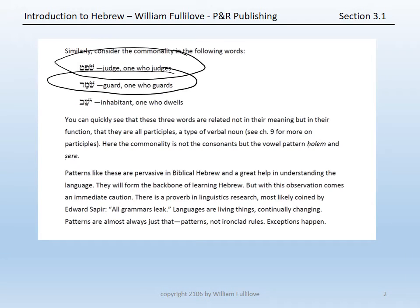You'll notice that these three again have a similarity, but now the similarity is not which three consonants are involved, but is instead the vowel pattern of a holom followed by a tsere. This vowel pattern is in fact the pattern that indicates a participle — a type of verbal noun that we will discuss in chapter nine.